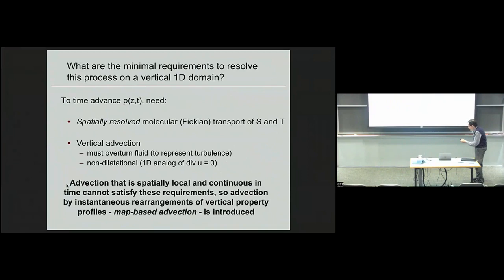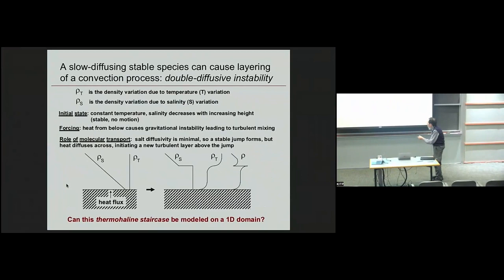This is called the Thermohaline Staircase. The configuration is uniform temperature, stable stratification due to salinity. Temperature diffuses faster than salt. Introduce heat flux, you get therefore a gravitationally unstable condition that generates a convection layer. But because the temperature diffuses faster, it leaks through the resulting stable jump here and gives birth to a new layer and so forth. We are now going to set aside fluid mechanics and ask, can we build a simple mathematical machine that does this?